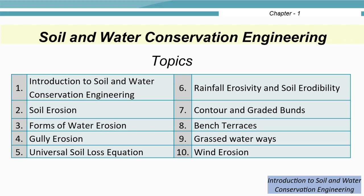In the Soil and Water Conservation Engineering course, you will be learning the following topics: Introduction to Soil and Water Conservation Engineering, Soil Erosion, Forms of Water Erosion, Gully Erosion, Universal Soil Loss Equation, Rainfall Erosivity and Soil Erodibility, Contour and Graded Bunds, Bench Terraces, Grass Waterways, and Wind Erosion. The current chapter is Introduction to Soil and Water Conservation Engineering.